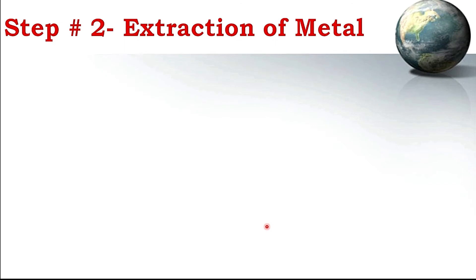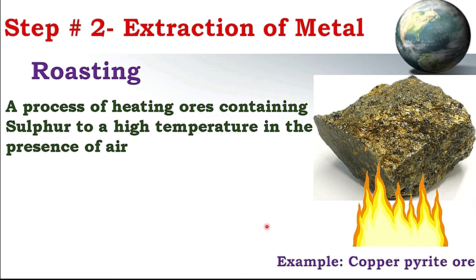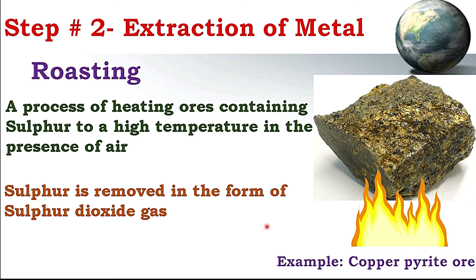The next step of the metallurgical industry is extraction of metal, with different processes involved. The first process is known as roasting, used for sulphur-containing ores. The ore is heated at high temperature in the presence of air, which converts sulphur into sulphur dioxide gas, allowing it to be removed from the ore very easily in gaseous form.